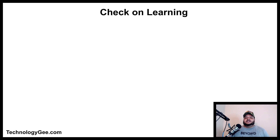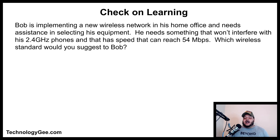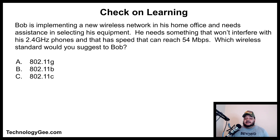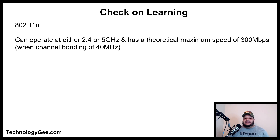Check on learning question one: Bob is implementing a new wireless network in his home office. He needs something that won't interfere with his 2.4 GHz phones and that has speeds reaching 54 megabits per second. Which wireless standard would you suggest? The correct answer is 802.11n, which can operate at 2.4 GHz or 5 GHz and has a maximum theoretical speed of 300 megabits per second with 40 MHz channel bonding.